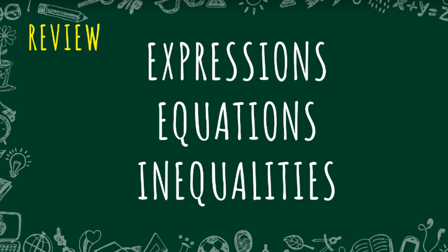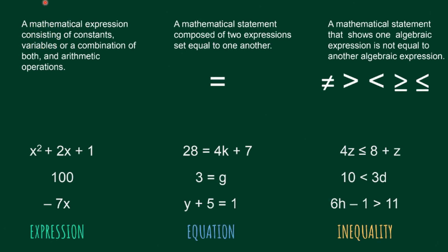Let's review expressions, equations, and inequalities. A mathematical expression consists of constants, variables, or a combination of both and arithmetic operations. For example, we have x squared plus 2x plus 1 — this is an example of an expression. It can also be just constants, like 100, or a combination of a constant and a variable, like negative 7x. This is also called an expression.